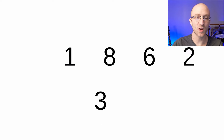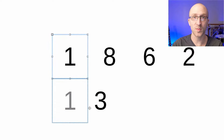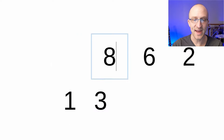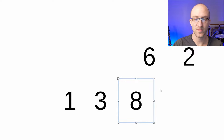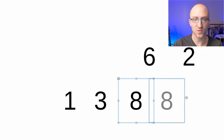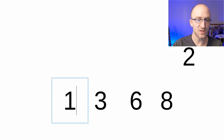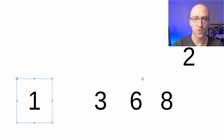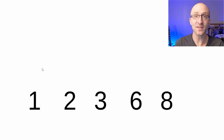The next element is the number one, and we need to insert it in its proper place in the list, which is before the number three. Next, we have the number eight, and we insert it in its proper place, which is after the number three. Then we have the number six, which needs to be inserted between the three and the eight. Finally, we have the number two, which needs to be inserted between the one and the three. Once we have gone through each element in the array and inserted it into its proper spot, we know that we now have a sorted array.